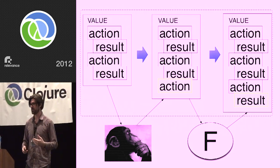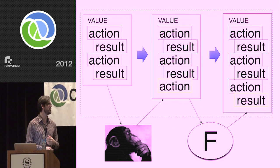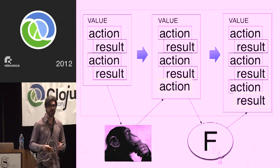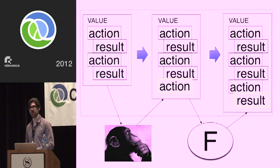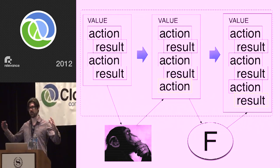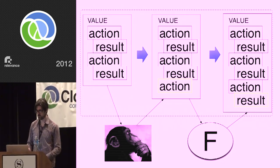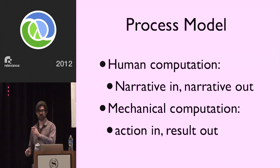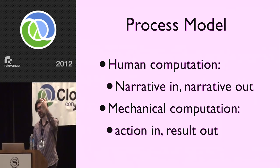Then it's the responsibility of the universe to produce the result. It will operate on the action — the whole history of stuff is there, but that's a vague thing requiring human intelligence to make a decision out of. We want the things we're telling what to do to make predictable decisions based on local information. So the services — we'll call them F — take the action and resolve it into a result. Between those two steps, we've completed the entire loop of adding to our narrative. Human computation: narrative in, narrative out. Mechanical computation: action in, result out.